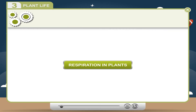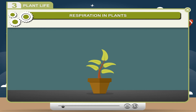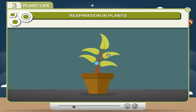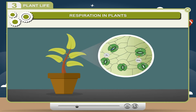Respiration in plants. Plants are living organisms, so they respire to survive. During respiration, they take in oxygen from the air and give out carbon dioxide. In plants, diffusion of gas takes place through the stomata, which are minute pores found on the leaves. Through stomata, plants take in oxygen and give out carbon dioxide.